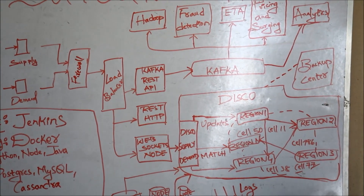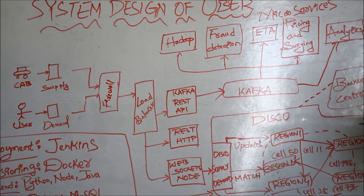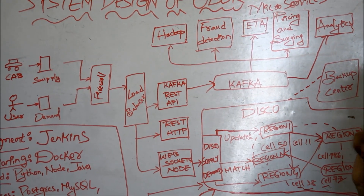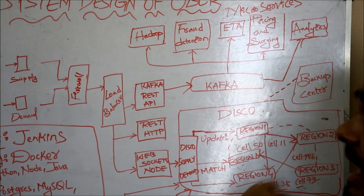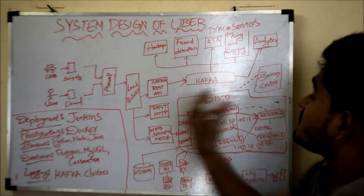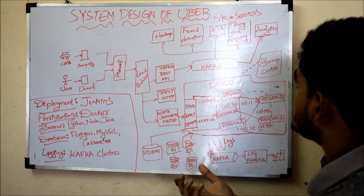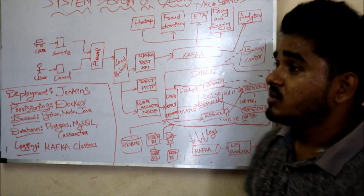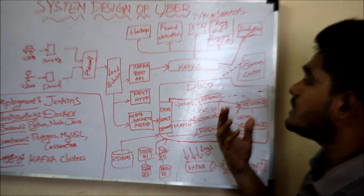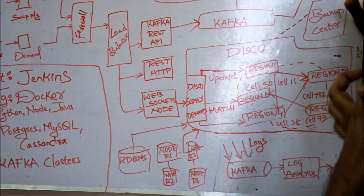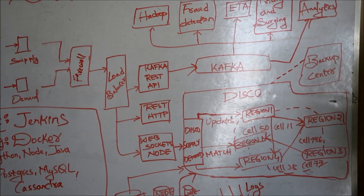ETA — estimated time of arrival — is an important factor when booking a cab. To get ETA information, we need Kafka's live feed data. Based on that data, we can also handle pricing and surge fees — for example, if traffic is high or it is nighttime. We can include such fees accordingly. Kafka is also used for analytics, such as giving coupons and vouchers to users who regularly book Uber services. We also have a backup center to maintain all data so it can be restored whenever needed.